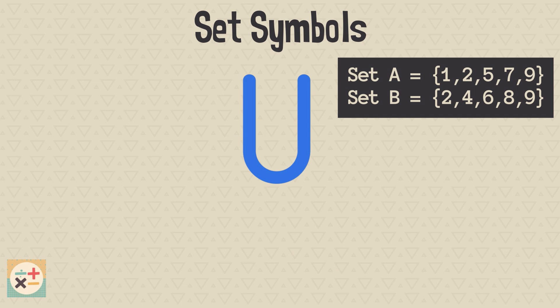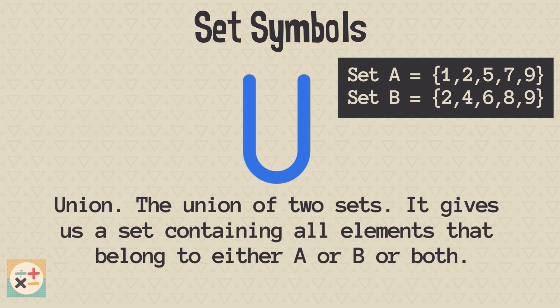This symbol represents the union of two sets. It gives us a set containing all elements that belong to either A, or B, or both. For example, this set is the union of A and B, as it contains some elements from set A, and some from set B.